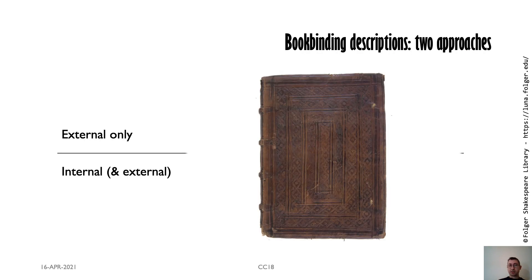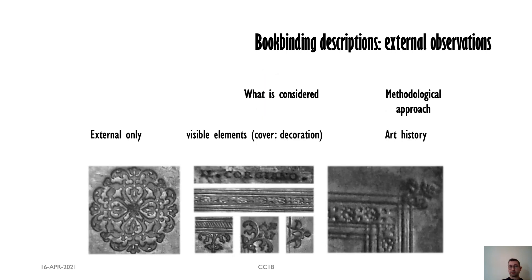When we see how researchers typically approach the study and description of bookbindings, we notice two main perspectives. One that is mainly focused on the external appearance of bindings, and the other that considers both the inside and the outside of these objects. The first approach considers the visible elements of the binding — basically its cover and decoration tooling in particular — following what can be seen as an art history approach to binding history.